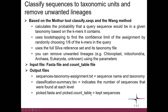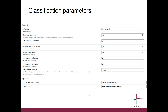You also get the FASTA and count table file of the classified sequences. The parameters look like this — you have the reference, then you can define the number of iterations for the bootstrapping, and you have several parameters for removing various lineages. If you want to remove something else, you can enter the name there.